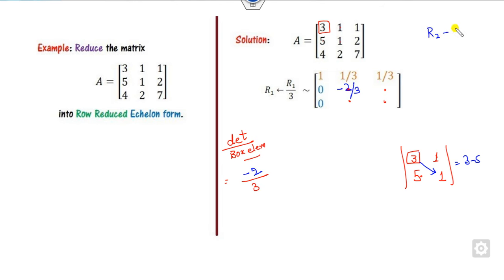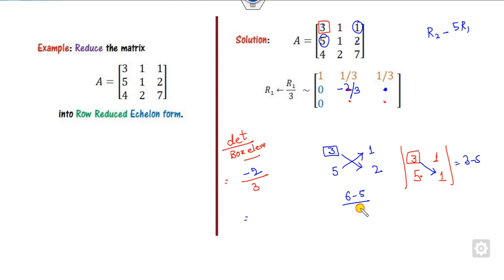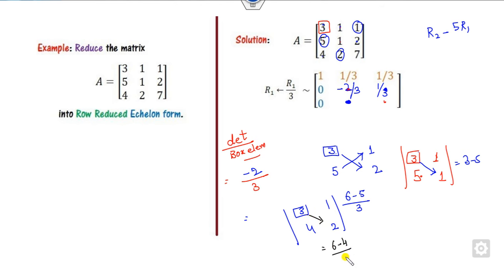There is no need to write operations like R2 minus 5·R1. Looking at another value — previous value is 2, box is 3, other values are 1 and 5: determinant is 6 minus 5 divided by box = 1/3. Another: previous value is 2, box is 3, other values are 1 and 4: 6 minus 4 divided by 3 = 2/3. And: previous value is 7, box is 3, other values are 4 and 1: 21 minus 4 = 17 divided by 3.